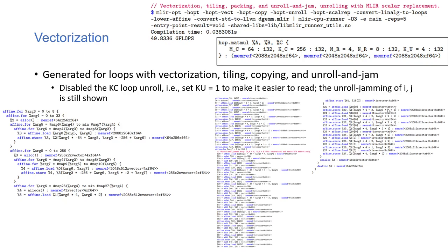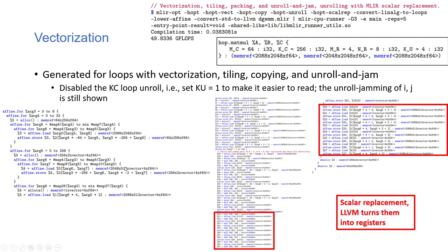You can see a vector size of 4 and unrolling factor of 8 in the generated code. By changing vector array expressions into scalars through scalar replacement, LLVM will turn them into registers. That is scalar replacement in action.